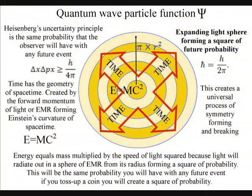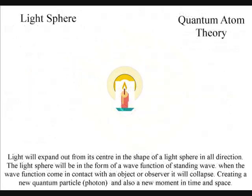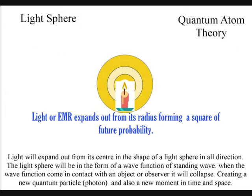This theory will be based on the equations and mathematics that we already have, therefore energy equals mass times the speed of light squared, because light will radiate out a sphere of electromagnetic waves from its radius, forming a square of future probability.